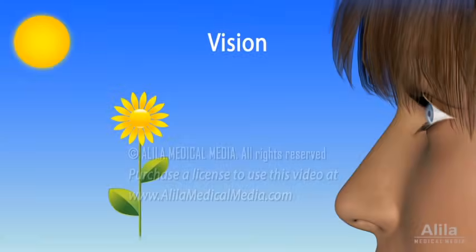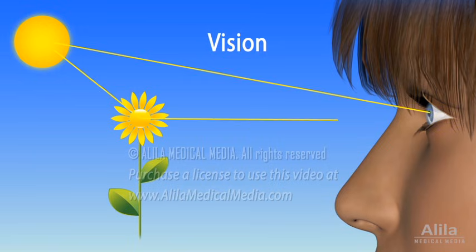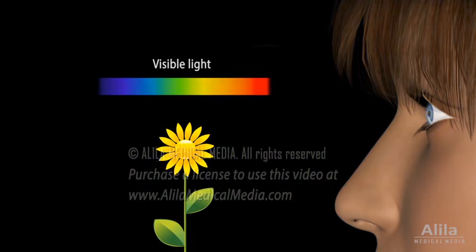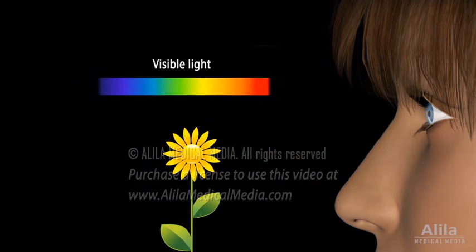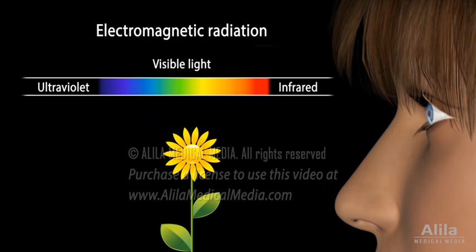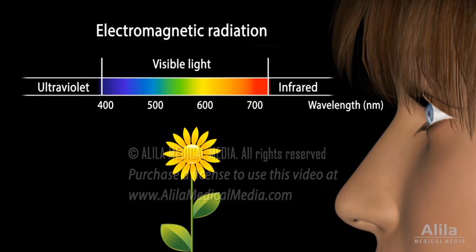Vision is the perception of objects based on the light that they emit or reflect. Human eyes can only detect visible light, a narrow range of electromagnetic radiation roughly from 400 to 750 nanometers in wavelength.